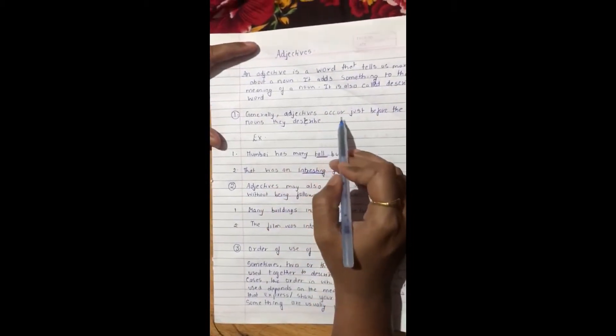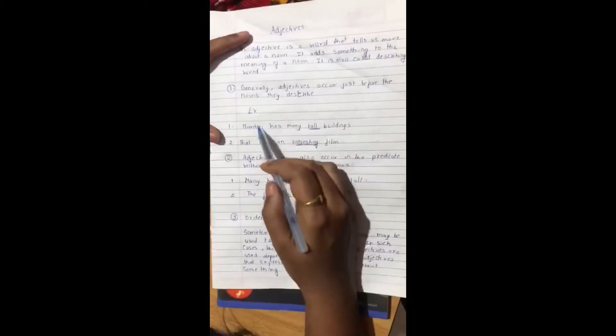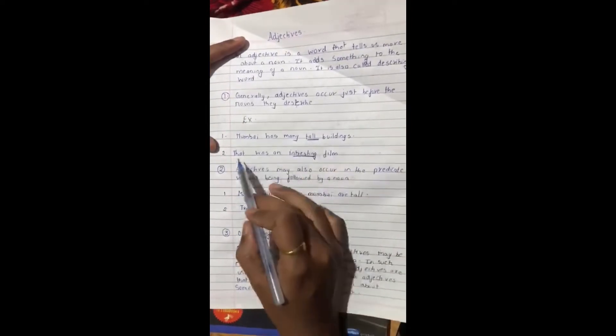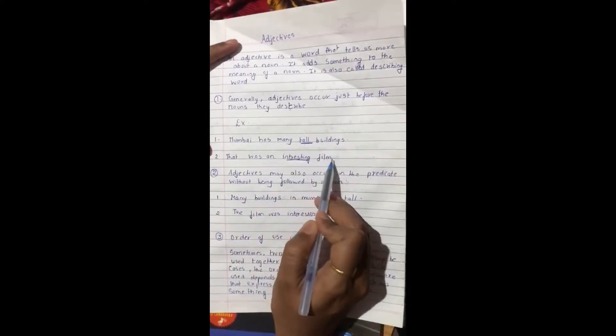Generally, adjectives occur just before the noun they describe. For example, Mumbai has many tall buildings. Tall. That was an interesting film. Interesting.